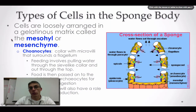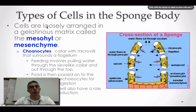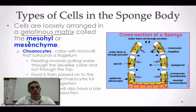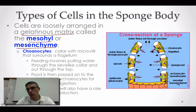In screencast number two, we're going to be looking at the different types of cells that you would find in the body of a sponge. These cells are going to be loosely arranged in what we call a gelatinous matrix, which we call either mesohyl or mesenchyme. On the right-hand side, you can see the mesohyl represented by the yellow layer, and all these different types of cells are going to be embedded within this layer.